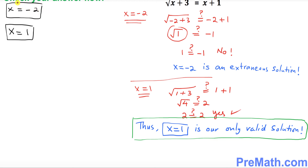So x equals negative 2 is not a valid solution, and x equals 1 is our only valid solution. Thanks for watching and please subscribe to my channel for more exciting videos.